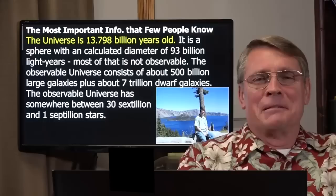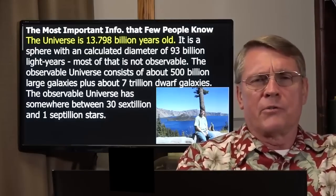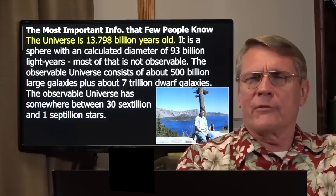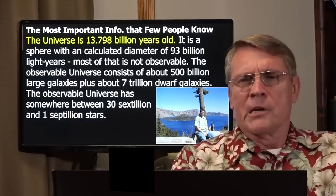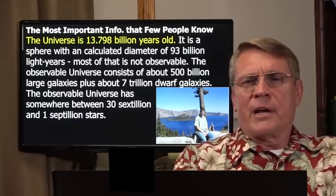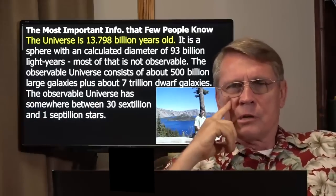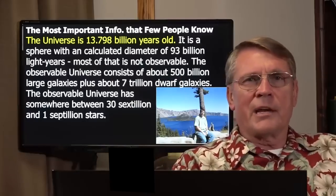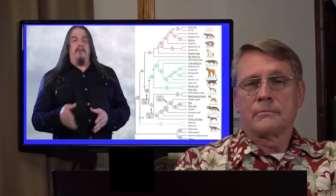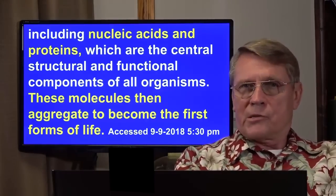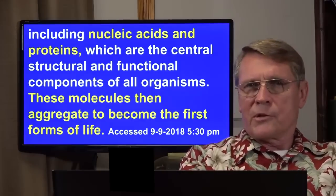The universe is 13.798 billion years old — that was as of 11 weeks ago. It is a sphere with a calculated diameter of 93 billion light years. Well, if it's only 13 or 14 billion years old, how did it get 93 billion light years across — did the stars move faster than the speed of light? If you don't even understand evolution yet, don't try to level up to cosmology — that's hard even for me. But what cosmologists are saying is that space can expand faster than the speed of light.